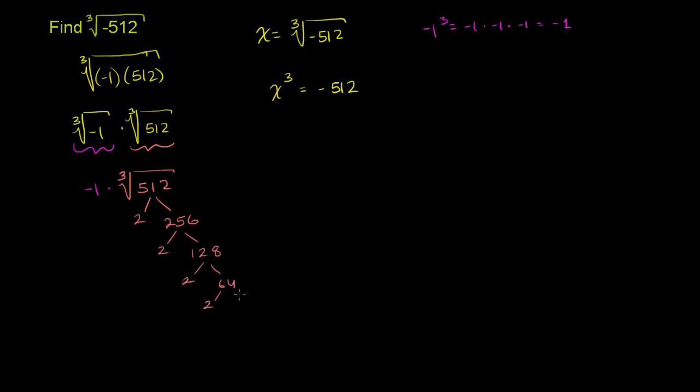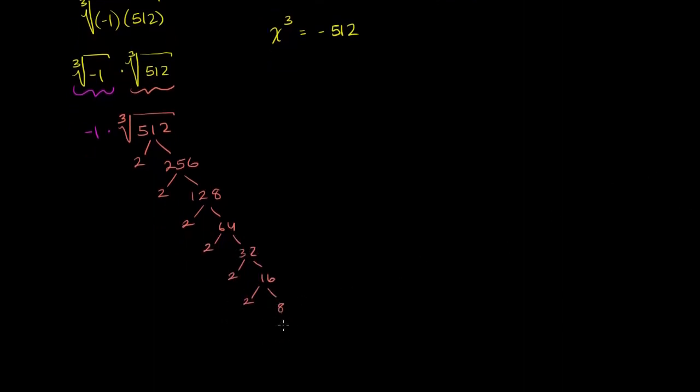64 is 2 times 32. 32 is 2 times 16. We're getting a lot of 2's here. 16 is 2 times 8. 8 is 2 times 4. And 4 is 2 times 2. So we got a lot of 2's if you multiply them. So essentially if you multiply 2 1, 2, 3, 4, 5, 6, 7, 8, 9 times, you're going to get 512. Or 2 to the ninth power is 512.